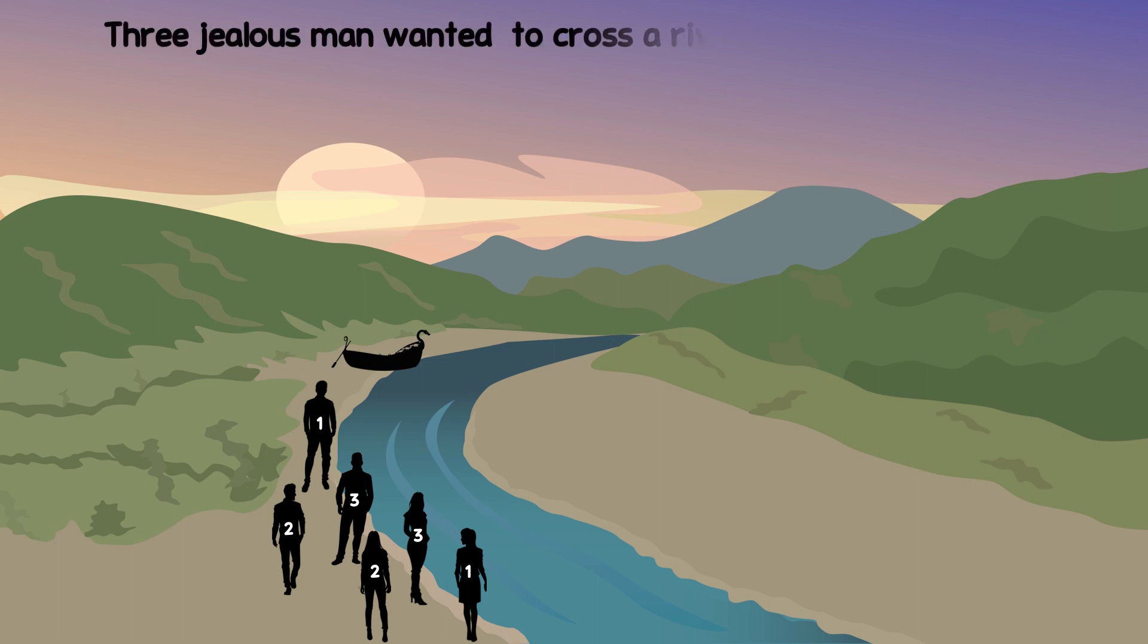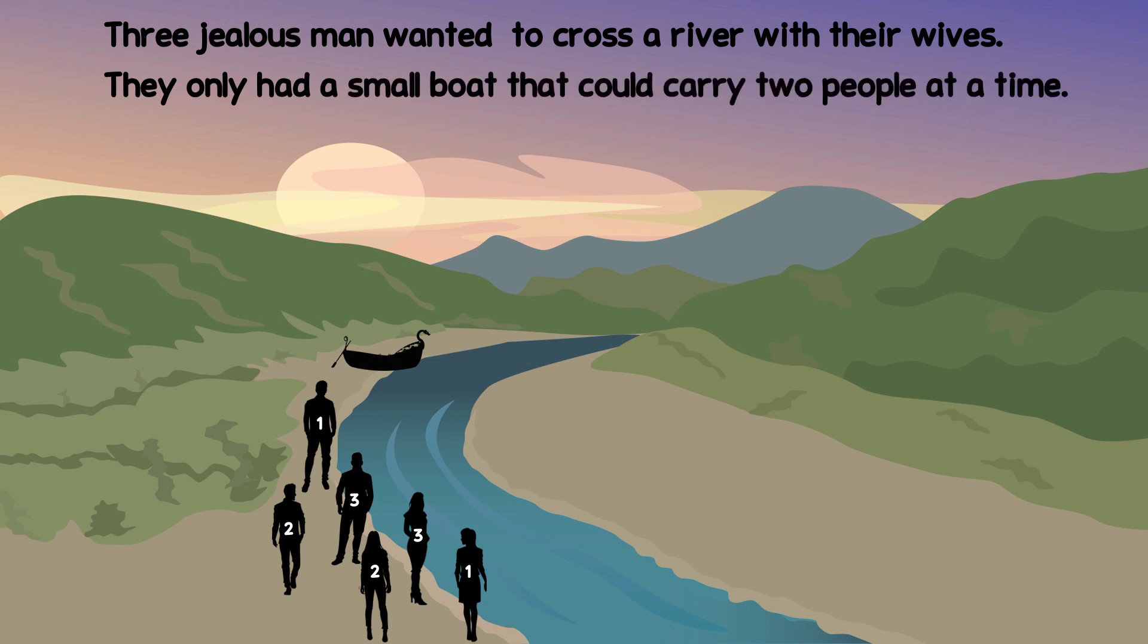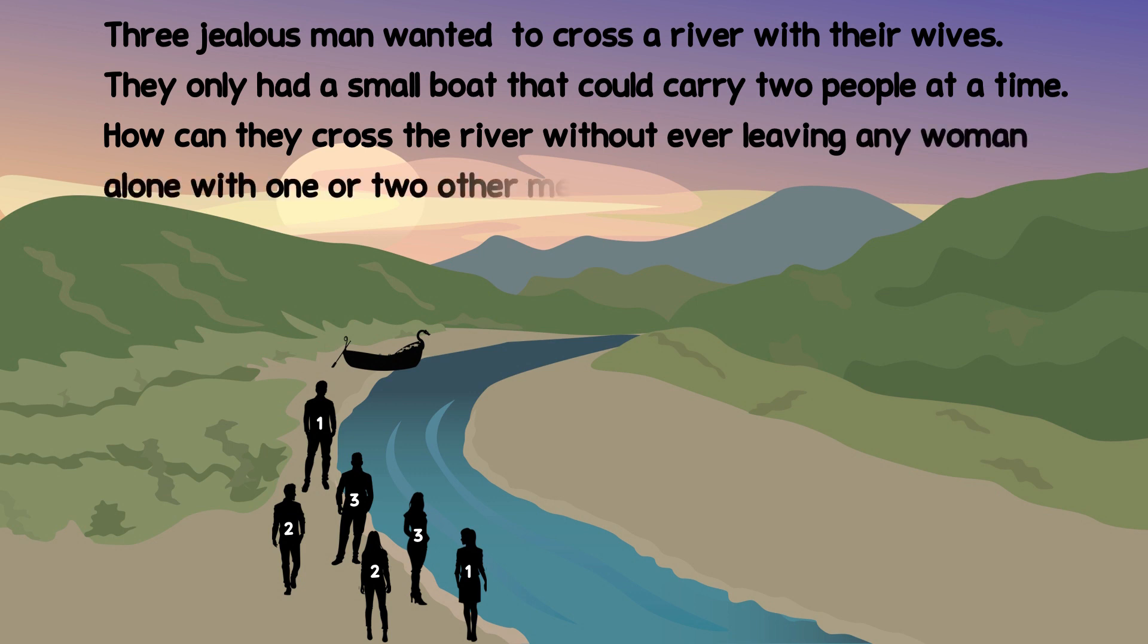Three jealous men wanted to cross a river with their wives. They only had a small boat that could carry two people at a time. How can they cross the river without ever leaving any woman alone with one or two other men?